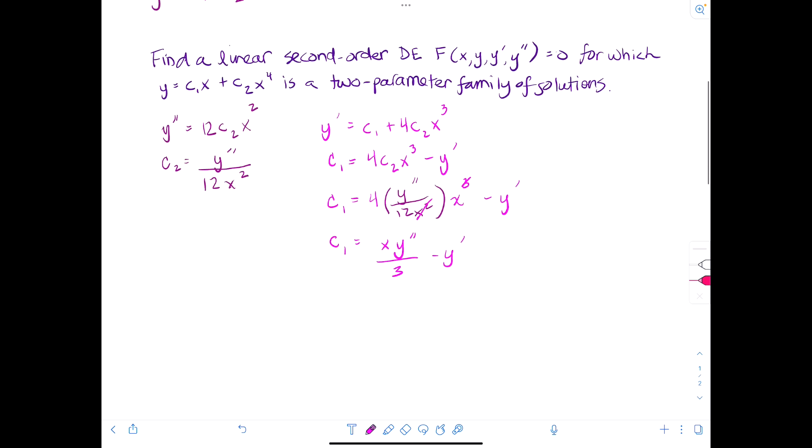And then putting it together, y is equal to c1 times x plus c2 times x to the fourth. So y is equal to x y double prime over 3 minus y prime times x plus c2, which was y double prime over 12 x squared. This one's going to be multiplied to x squared. This one's going to be multiplied to x to the fourth.